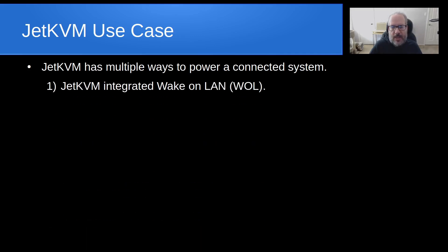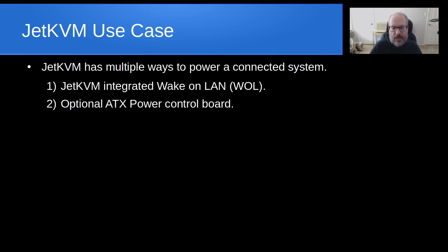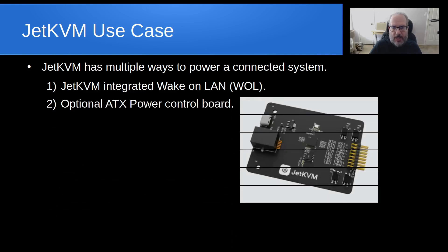The Jet KVM has multiple ways to power the system to which it is connected. One is to use the Jet KVM integrated wake-on-LAN capability, which is part of the Jet KVM webpage. Secondly, they have an optional ATX power and control board designed to be fitted into the back panel of an ATX system. This expansion port is the RJ-11, which goes back to the RJ-11 expansion port on the Jet KVM.